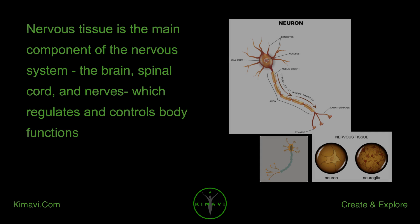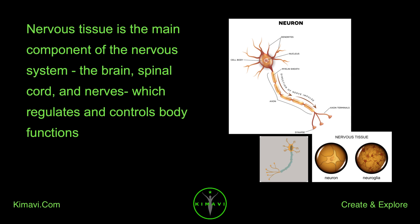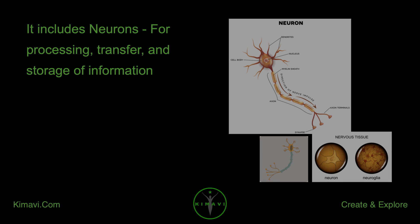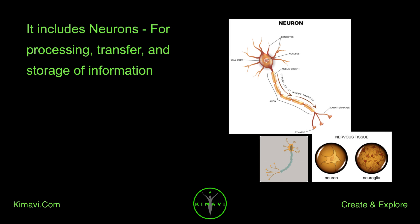Nervous tissue is the main component of the nervous system — the brain, spinal cord, and nerves — which regulates and controls body functions. It includes neurons for processing, transfer, and storage of information.